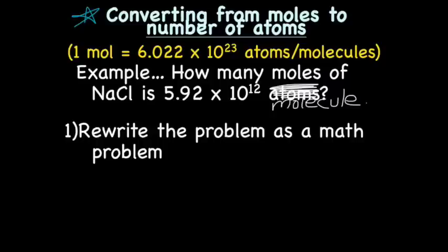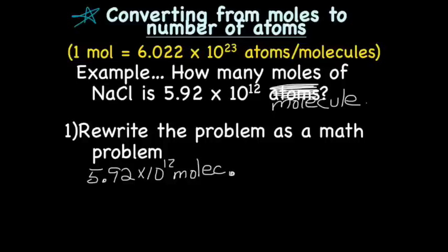So, step one. Rewrite the problem as a math problem. So start with what you know. Now, we know that we have 5.92 times 10 to the 12th molecules, and if you want to abbreviate molecules, you can, as MOLIC, equals, what are we trying to find out? How many, right? X moles. The abbreviation for moles is MOL. All right, so step one. Rewrite it as a math problem. Check.